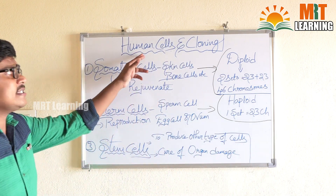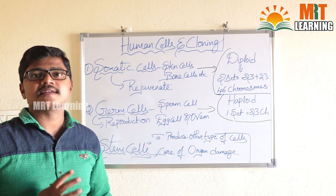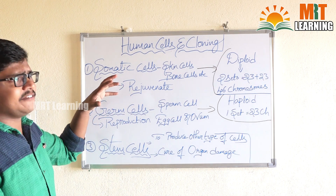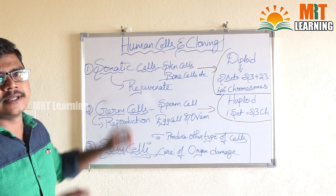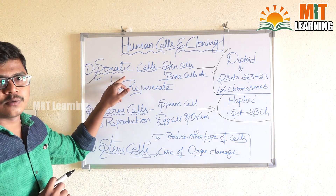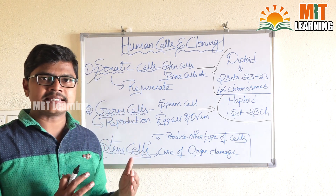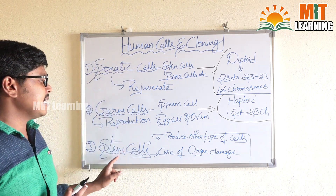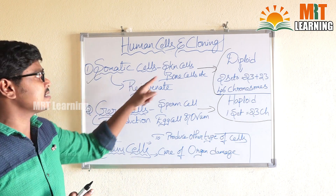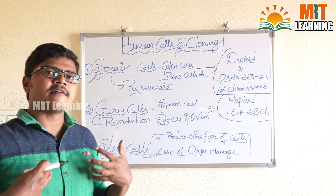An interesting fact: approximately 30 trillion cells are in our human body. These different types of cells are categorized into three groups. The first category is somatic cells. Examples of somatic cells include skin cells, bone cells, and most remaining cells — the maximum of our body is filled with somatic cells only.